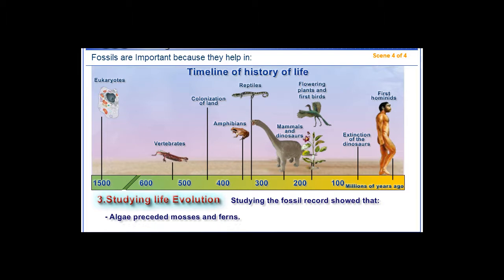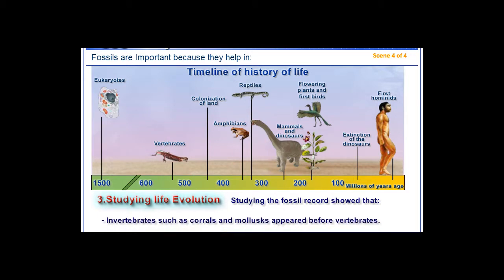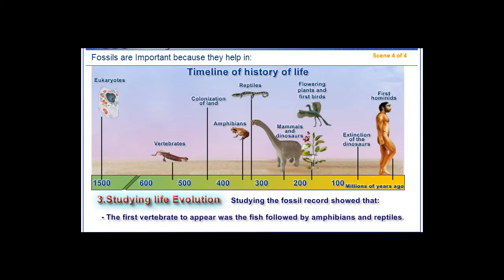Algae preceded mosses and ferns. Angiosperms appeared before gymnosperms. Invertebrates, such as corals and mollusks, appeared before vertebrates. The first vertebrate to appear was the fish, followed by amphibians and reptiles. Birds and mammals appeared together after reptiles.